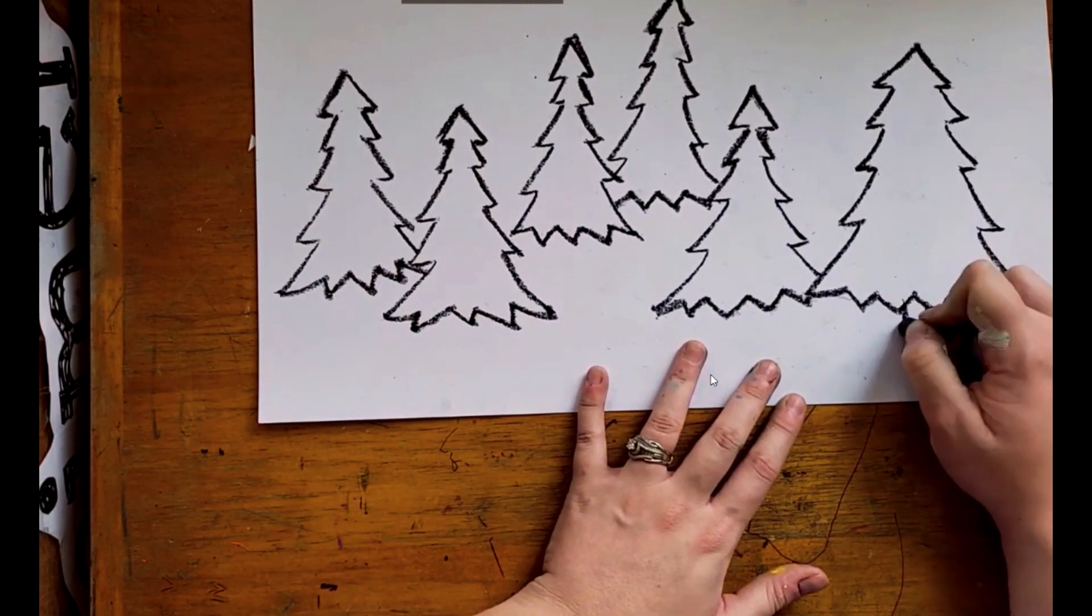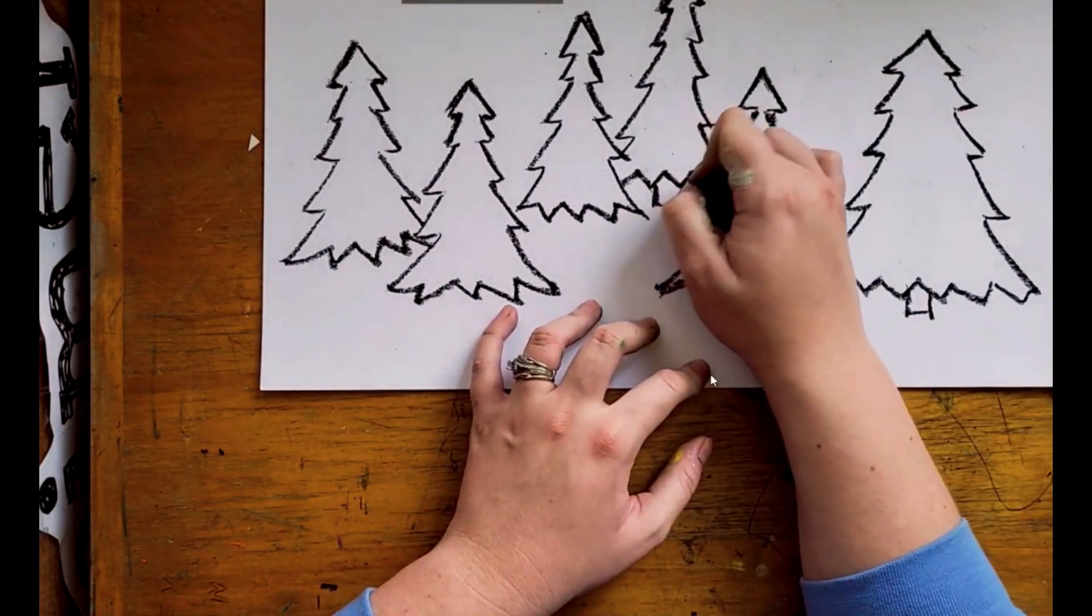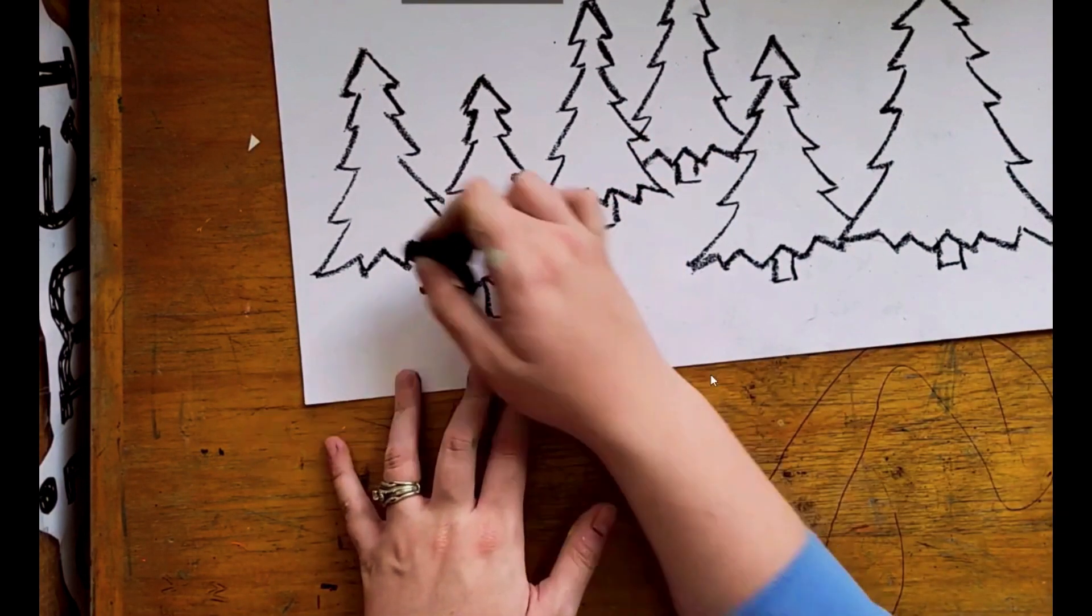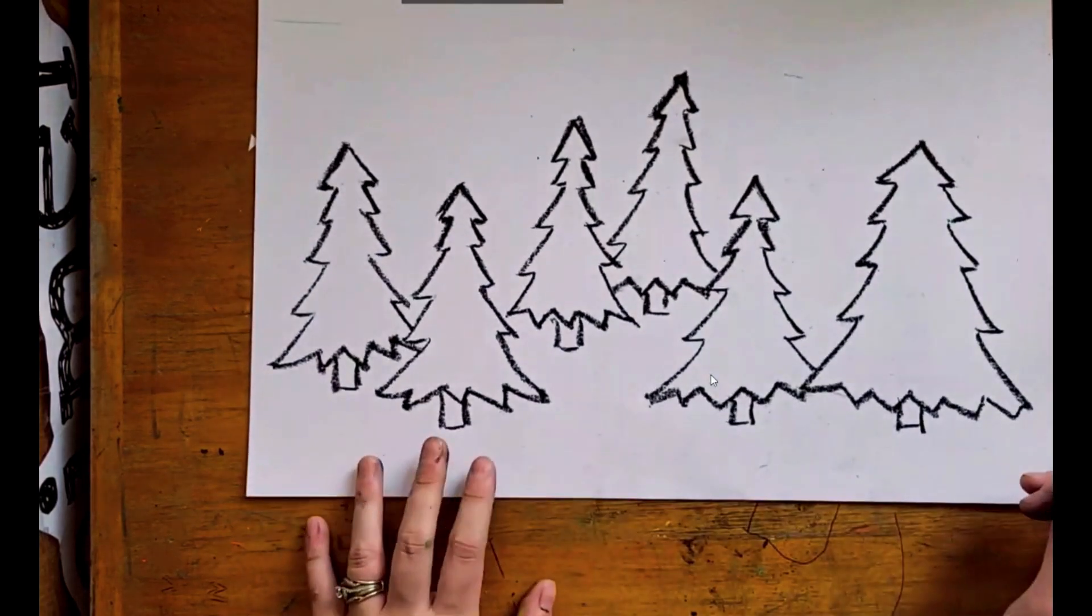All right. Now I can draw some little rectangles, silly me, at the bottom for, you know, those tree trunks that trees tend to have. And now I am finished drawing my trees.